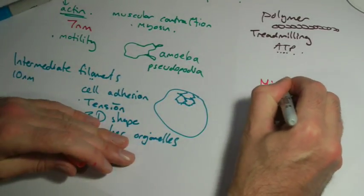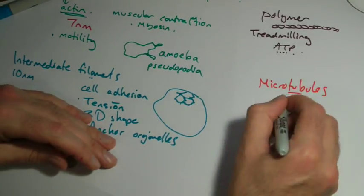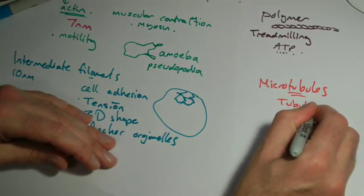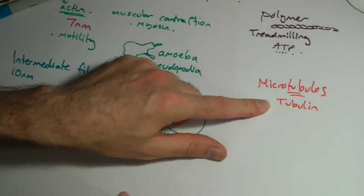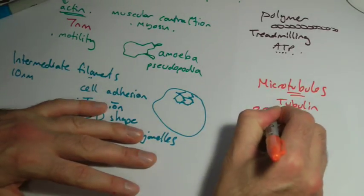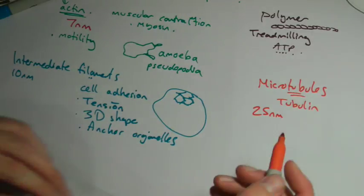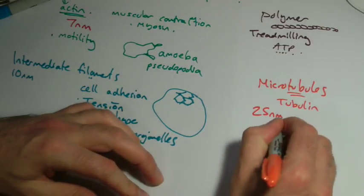Our third type are microtubules, and this is not a too difficult one to remember. The protein involved is something called tubulin. Microtubules, tubulin. And they're the biggest diameter, approximately 25 nanometers. You'll see different numbers for this, but 25 is fine.